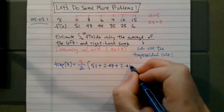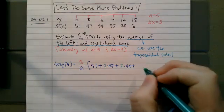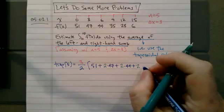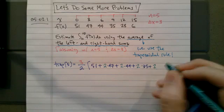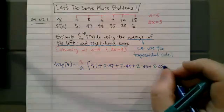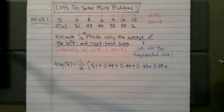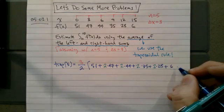plus two copies of the 35, plus two copies of the 28, and only one copy of the 6, because the 6 is not in the left hand sum, but it is in the right hand sum. So it only shows up once.